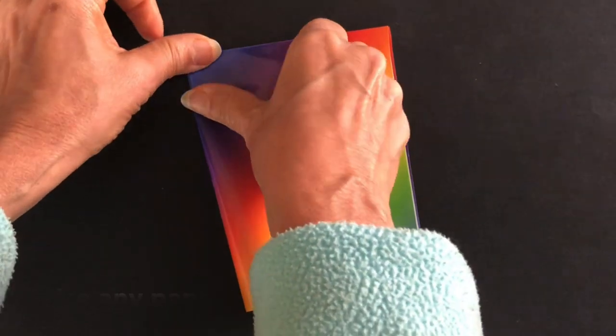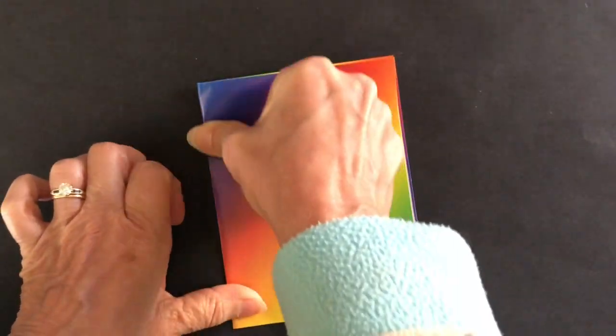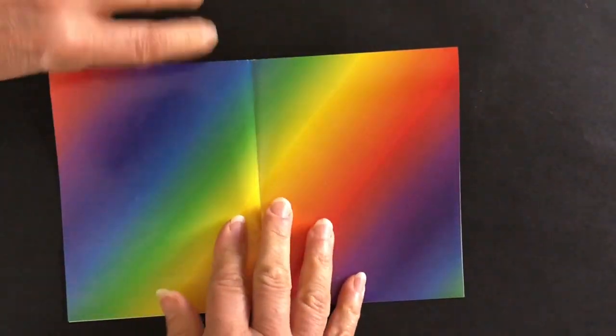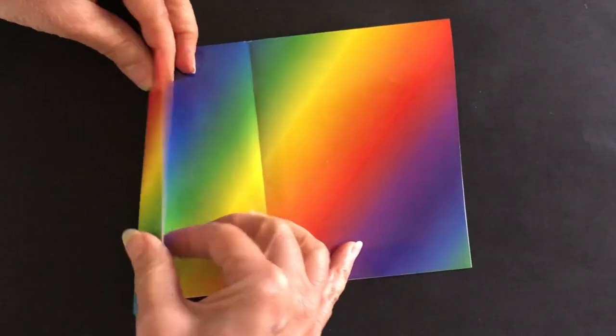This is a little thicker so you want to make sure you're really creasing crisp corners. I'm going to open it and we'll take one side and fold it into the middle.